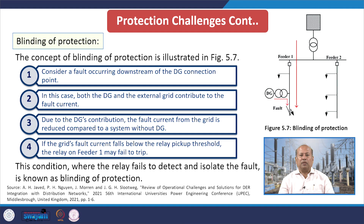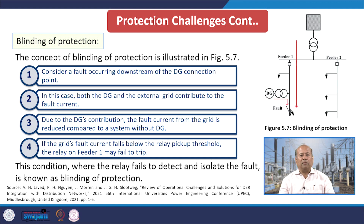In case of blinding of protection, as seen from diagram 5.7: it considers a fault occurring downstream of the DG connection point. Both the DG and the external grid contribute to the fault current. Due to the DG's contribution, the fault current from the grid is reduced compared to a system without DG. If the grid's fault current falls below the relay pick-up, the relay on feeder 1 may fail to trip. This condition — where the relay fails to detect and isolate the fault — is known as blinding of protection.